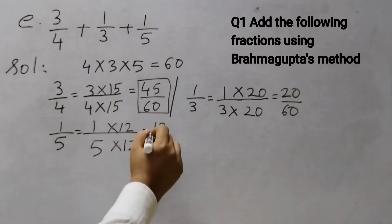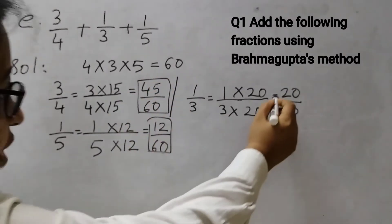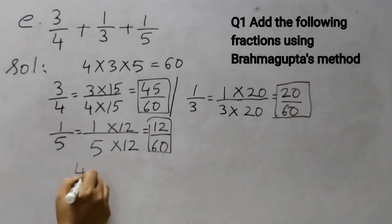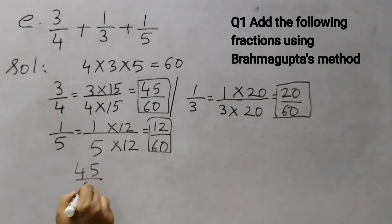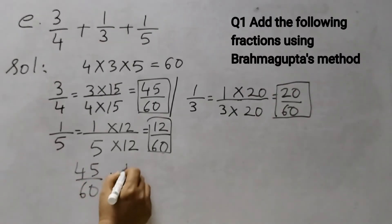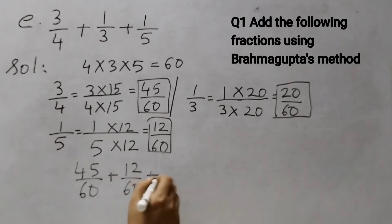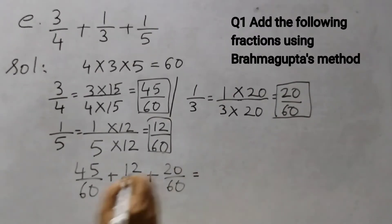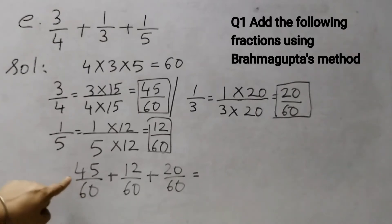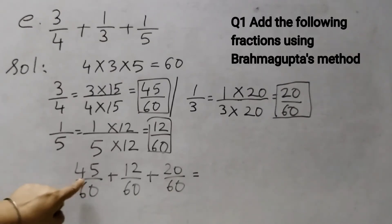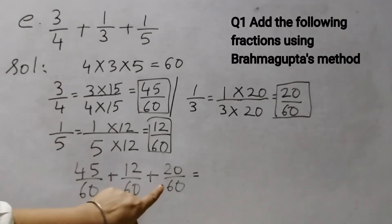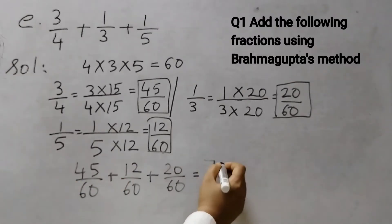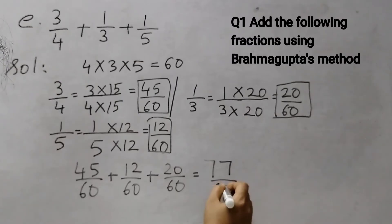Now we need to add these fractions. So we write 45/60 + 20/60 + 12/60. Keep the denominators as they are and add up the numerators. 45 + 20 = 65, and 65 + 12 = 77. So that would be 77/60.